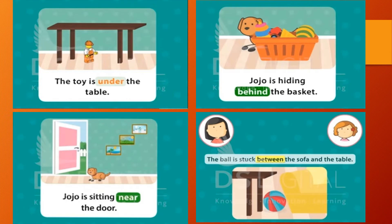The toy is under the table. Now this dog's name is Jojo. Jojo is hiding behind the basket. Jojo is sitting near the door.